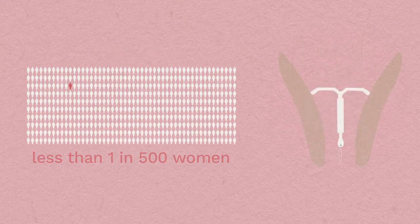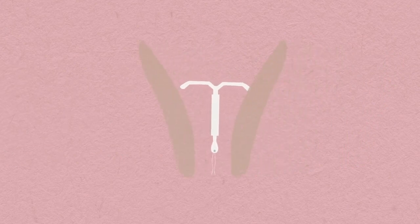Very rarely, the device can go through the wall of the womb during insertion. If this is recognised at the time, the device will be removed. Otherwise, it will have to be removed later with keyhole surgery.